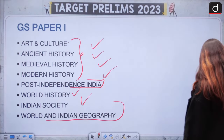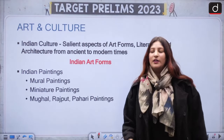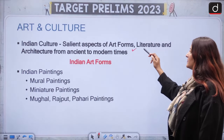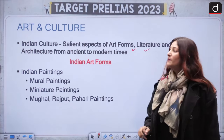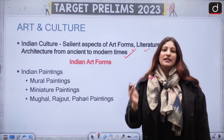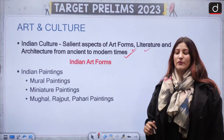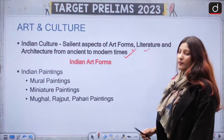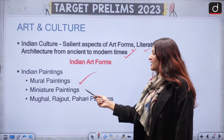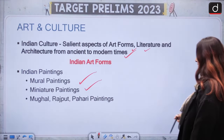Let us start with Art and Culture — Indian culture, salient aspects of art forms, literature and architecture from ancient to modern times. In Indian art forms, we have Indian paintings, which you will cover from the perspective of both prelims and mains: Mural paintings, Miniature paintings, Mughal, Rajput, and Pahadi paintings.